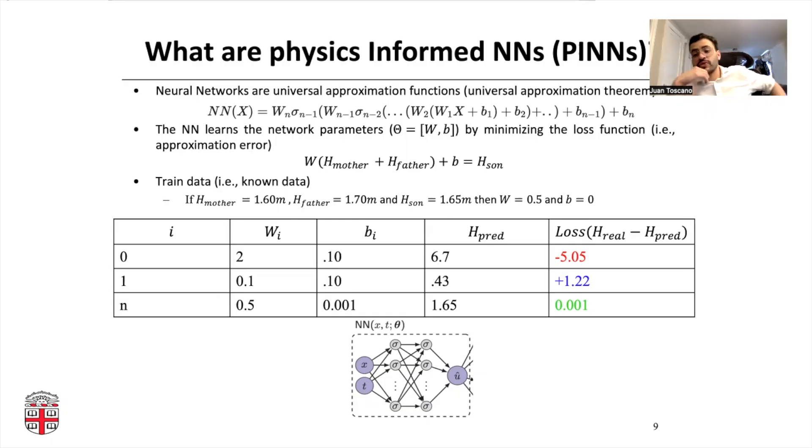One of the key concepts required to understand a physics-informed neural network is that a neural network by itself is a function that has an extraordinary capability to approximate to any other function, something similarly like a polynomial. Here you can see that the actual form of the neural network is nothing more than a set of linear transformations linked by some non-linearities, and these non-linearities are called activation functions.